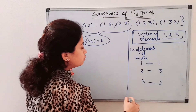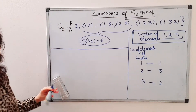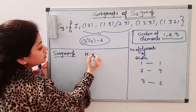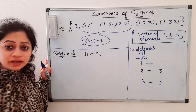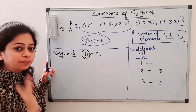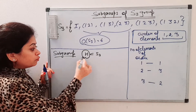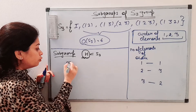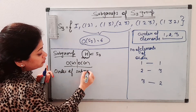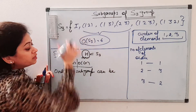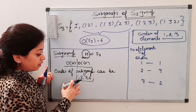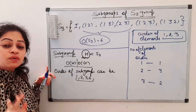Now we come to what is a subgroup. If H is a subgroup of S3, it should be a subset of S3, and if that subset is itself a group with respect to the same operation, then we call it a subgroup. According to Lagrange's theorem, the order of a subgroup divides the order of the group. So for S3 the possible orders of subgroups are one, two, three, and six.